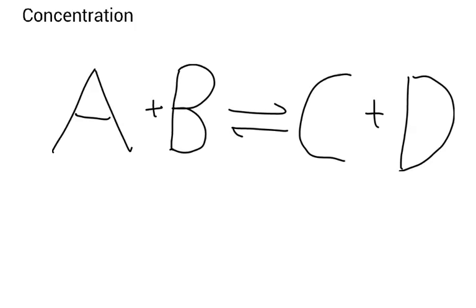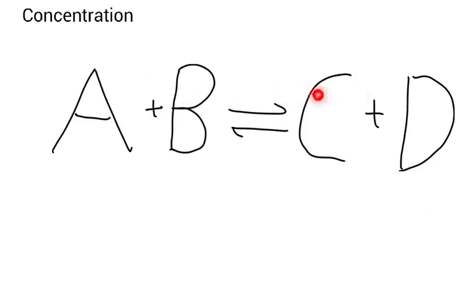Finally, let's talk about concentration. Here I've got a simple equation: A + B goes to C + D, a reversible reaction. If I increase the concentration of A or B, the equilibrium position moves towards C and D. If I remove A or B — decreasing the concentration — the system opposes that change and the equilibrium position shifts back towards A and B. Likewise, if I reduce C or D, the equilibrium position shifts right to increase their concentration; if I increase C or D, the equilibrium position moves back towards A and B.